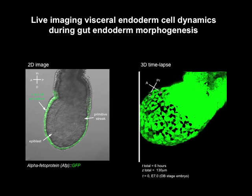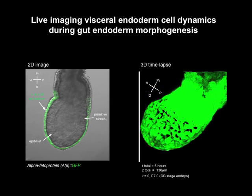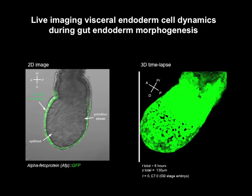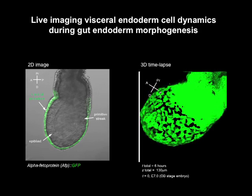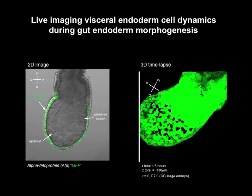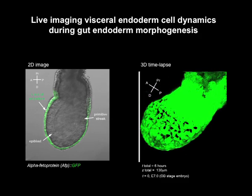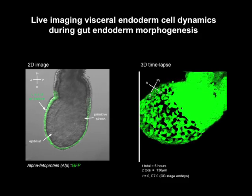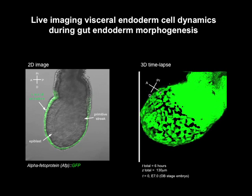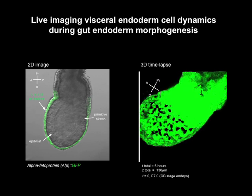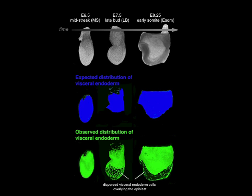We generated various reporter strains of mice where we labelled the visceral endoderm with different fluorescent proteins, or alternatively directed the expression of cre-recombinase specifically within the visceral endoderm for genetic fate mapping. This is an example of one of the reporter strains we generated. The left-hand image is a midline section of a transgenic embryo — you can clearly see the separation between visceral endoderm, which expresses GFP, and epiblast, which does not. On the right is a projection of time-lapse data. As the movie plays, you can see that distally, visceral endoderm becomes dispersed: it starts off as homogeneously GFP positive, but over time, increasing numbers of GFP negative regions appear. These observations are summarised in images depicting the expected versus the observed distribution of visceral endoderm.